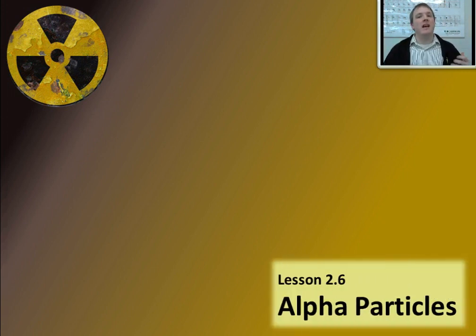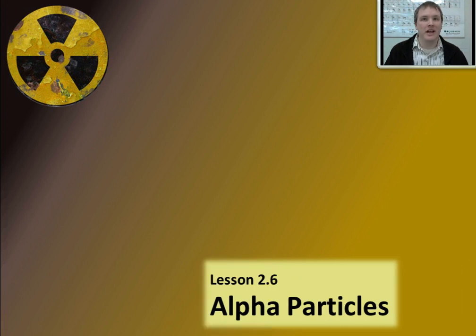In this lesson, we're going to be taking a look at the first type of particle radiation, alpha particles. Following this lesson, we'll take a look at the other two types of particle radiation, so there's three total, and the type of radioactive energy that's released as pure energy, not even particles at all. Let's get started considering alpha particles, the first and least dangerous type of radioactive radiation.